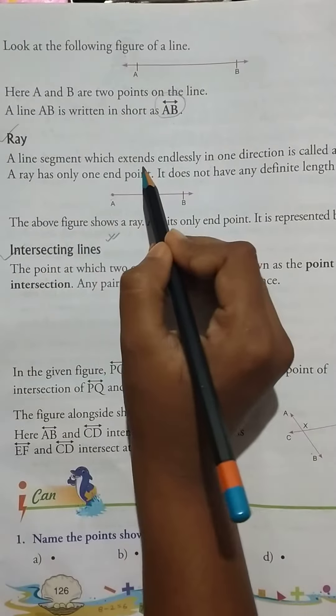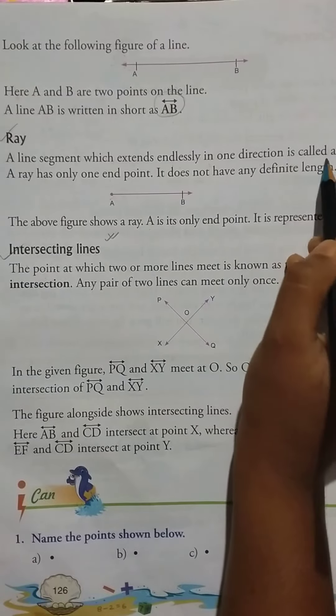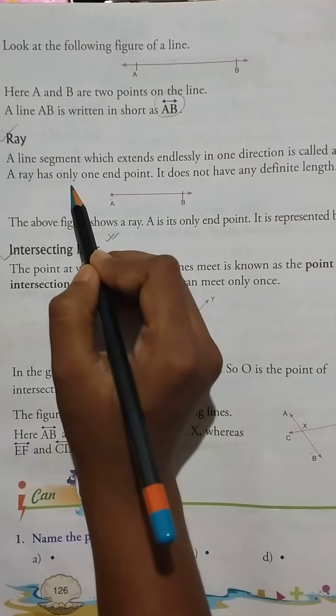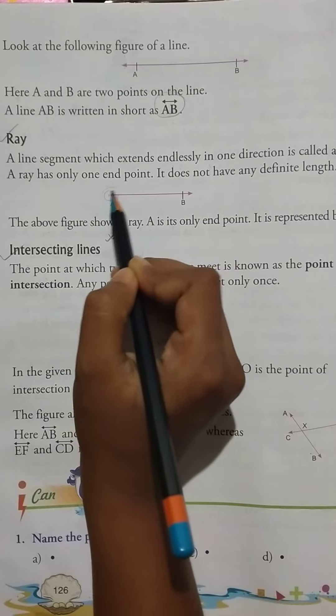A line segment which extends endlessly in one direction is called a ray. A ray has only one end point.